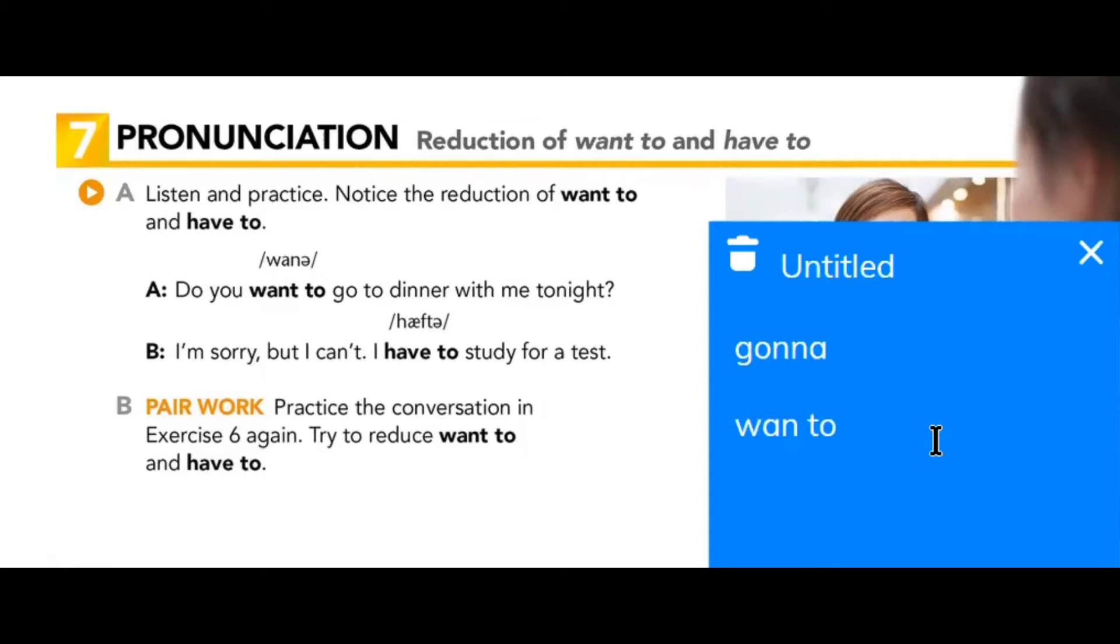Want to. Eu só falo want to. Want to. Want to. E aí a gente vai ter uma outra regra que diz que o T depois da letra N ele é opcional. Então nós estamos trabalhando com duas regras aqui. Primeira regra: duas letras iguais no final de uma palavra e o início da outra, a gente não fala. I wanted to go. Olha como fica feio. I wanted to go. I want to go. É isso que eu vou dizer. I want to go.